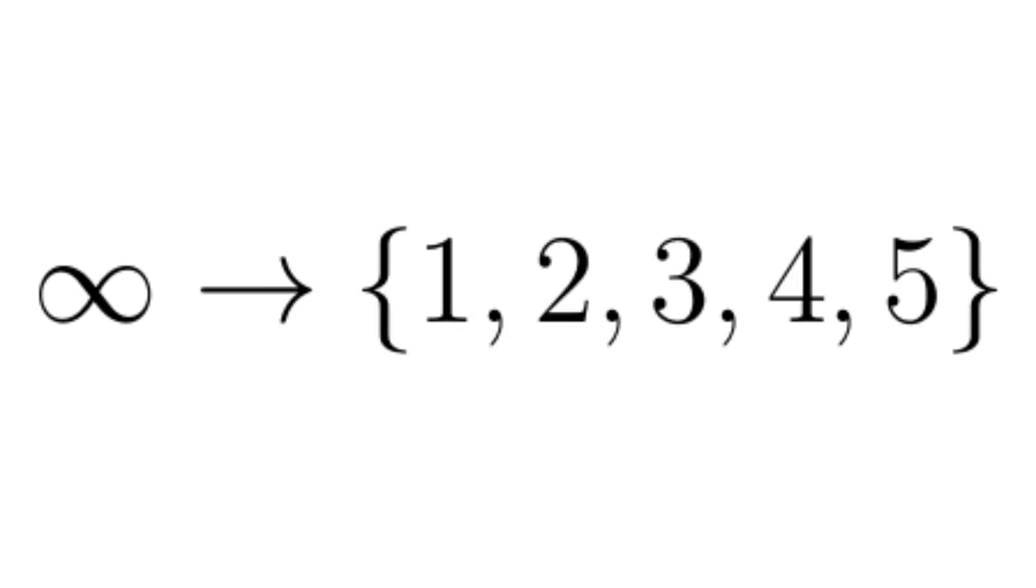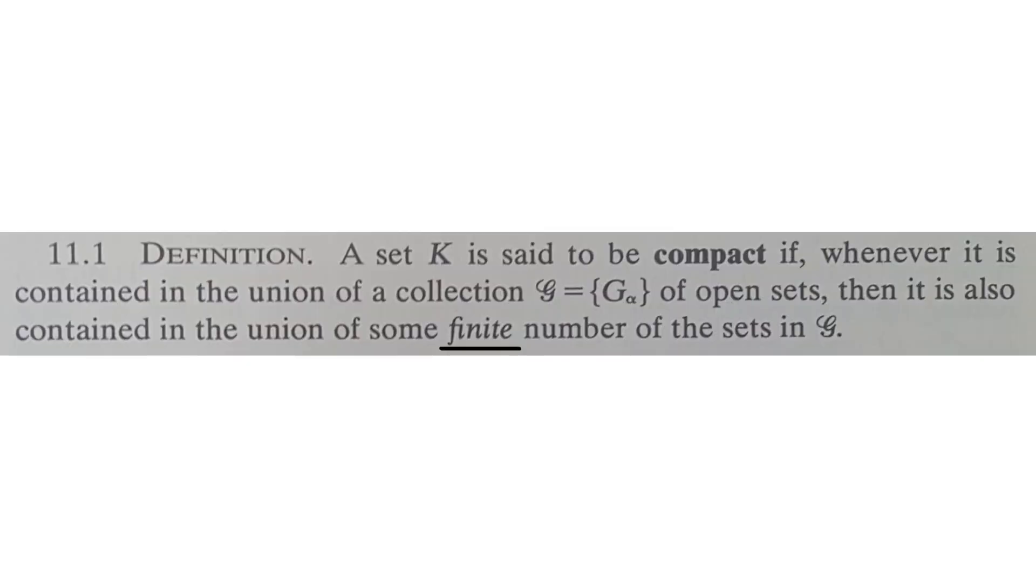Why this seemingly random definition? Compactness gives a way in math to do something difficult, to move from the infinite to the finite. It allows me to stop talking about an infinite number of things and get to talk about a finite number of things. This is useful because a finite amount is usually much easier to talk about than an infinite amount of things, because infinity is confusing.